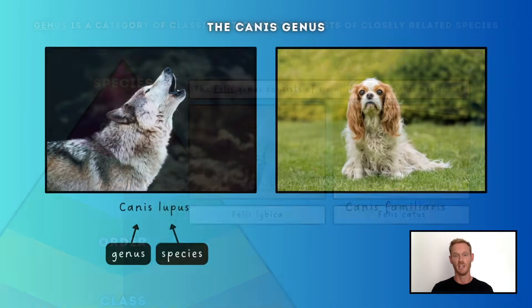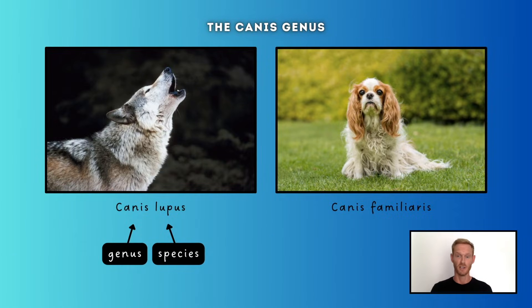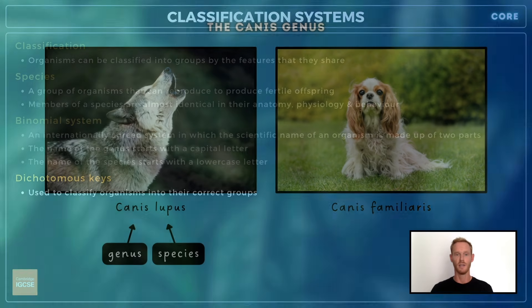The name of the genus, which means the generic name, always starts with a capital letter, while the name of the species, the specific name, always starts with a lowercase letter.